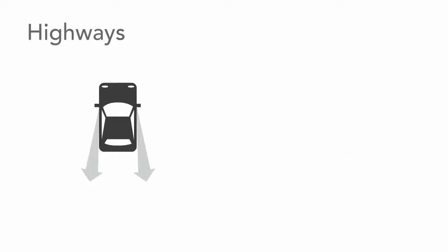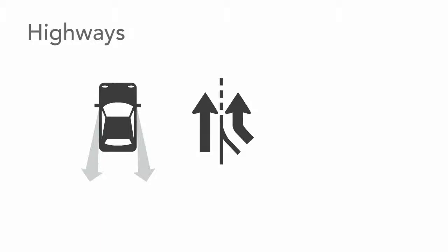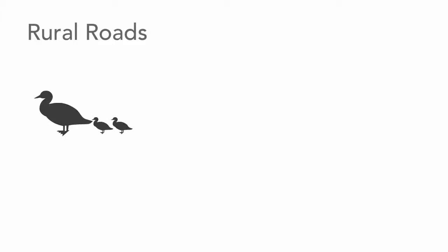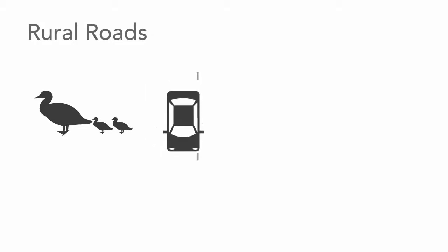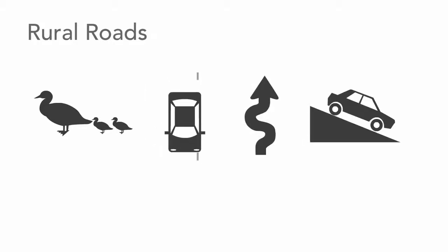On highways, the risks are blind spots, on and off ramps, merging, and wandering animals. On rural roads, the risks include animals, oncoming traffic crossing the line, blind curves, and traveling down hills.